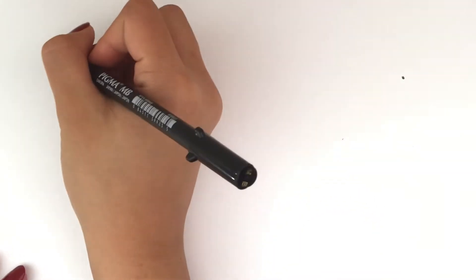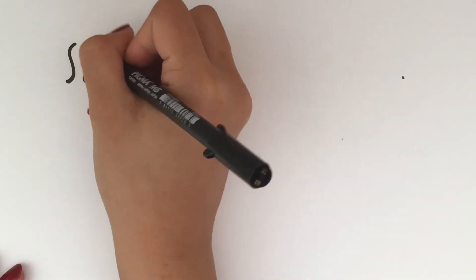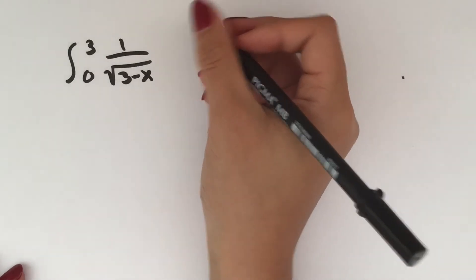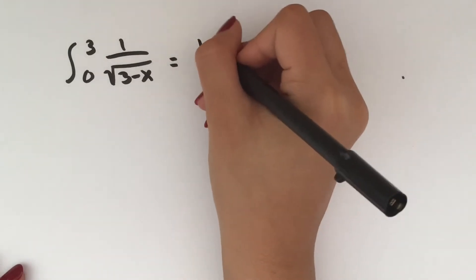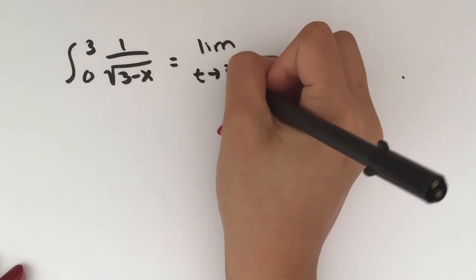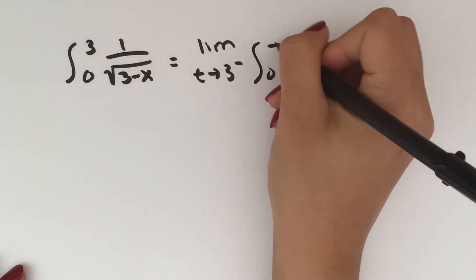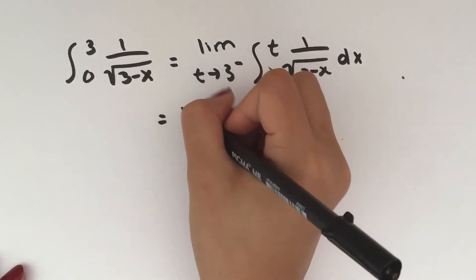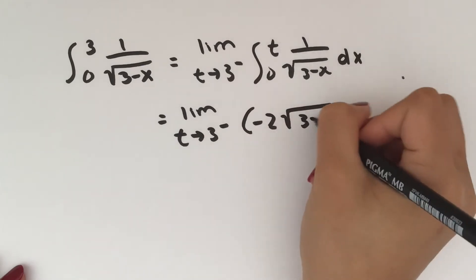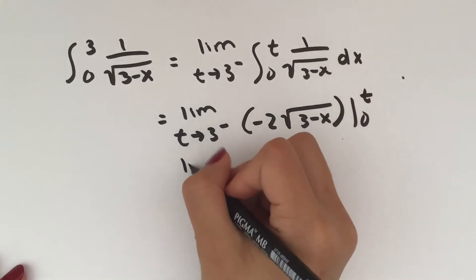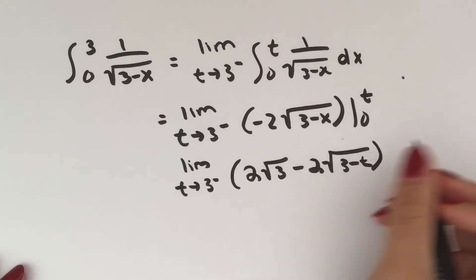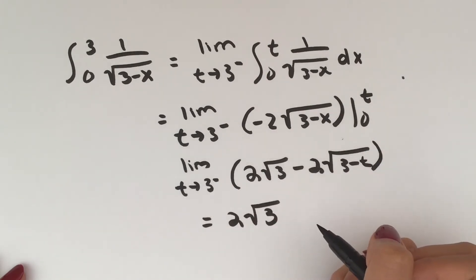Now let's try example problems with discontinuous integrands. We'll start with the integral from 0 to 3 of 1 over the square root of (3 − x) dx. The problem point is the upper limit, so we use the first case with a left-hand limit. We take the left-hand limit as t approaches 3 of the integral from 0 to t of the function. The anti-derivative is negative 2·√(3 − x) from 0 to t, and taking the limit as t approaches 3 from the left gives us 2√3. The limit exists and is finite, so the integral converges to 2√3.